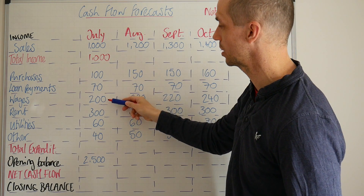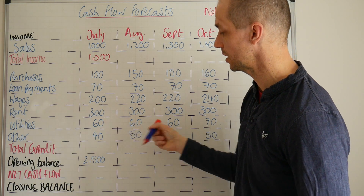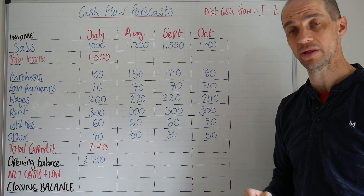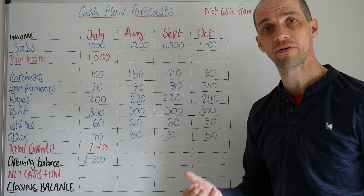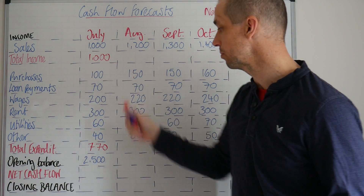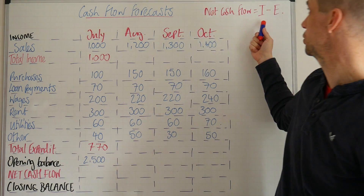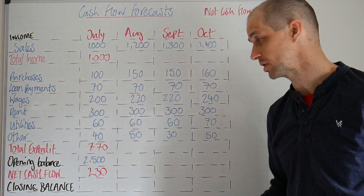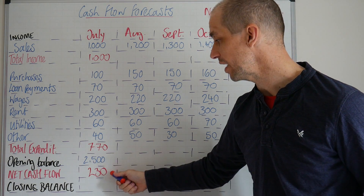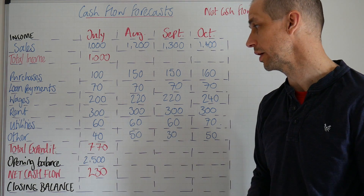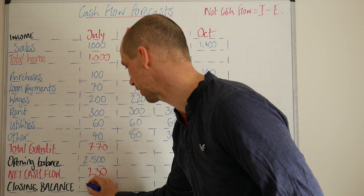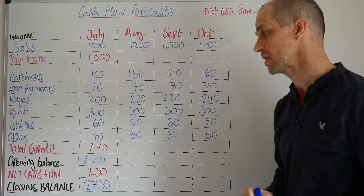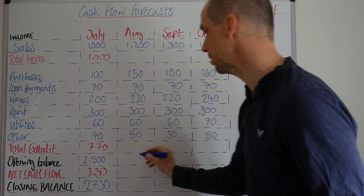We total up the expenditure amounts: 370, 670, 730, 770 — so we're left with 770 pounds as our total expenditure. This business had 2500 pounds as its opening balance. Income minus expenditure gives us a net cash flow of 230 pounds, which then gets added on to our opening balance.